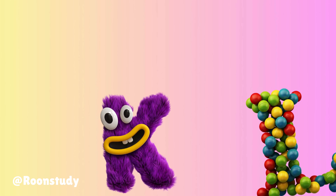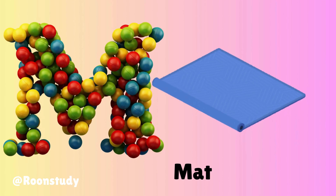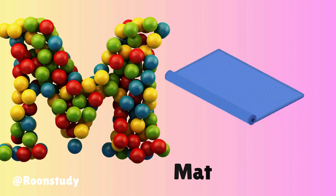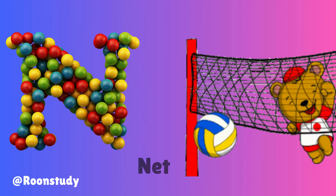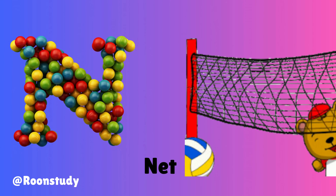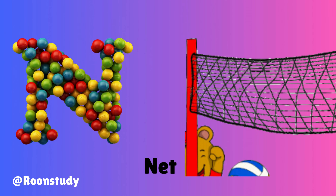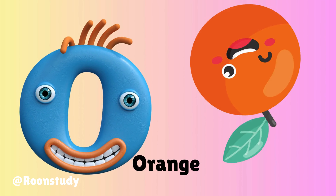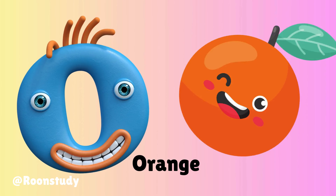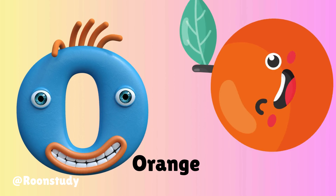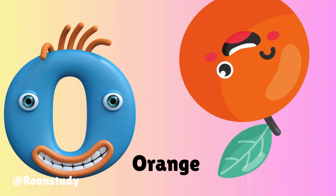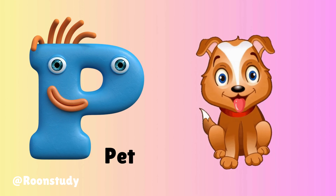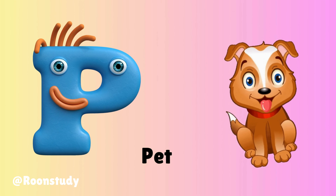M is for mat, m-m-mat. N is for net, n-n-net. O is for orange, o-o-orange. P is for pet, p-p-pet.